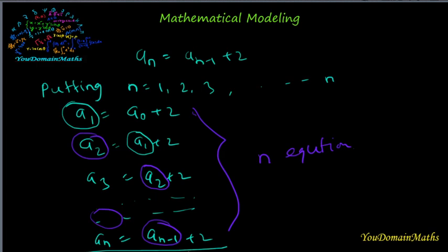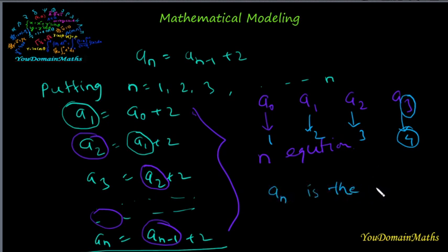If we carefully observe that a₀, a₁, a₂, and a₃ - this is the first term, this is the second term, this is the third term, this is the fourth term. So it is clear that aₙ is the (n+1)th term. We can write easily that aₙ, the (n+1)th term, equals the first term plus 2 times n.